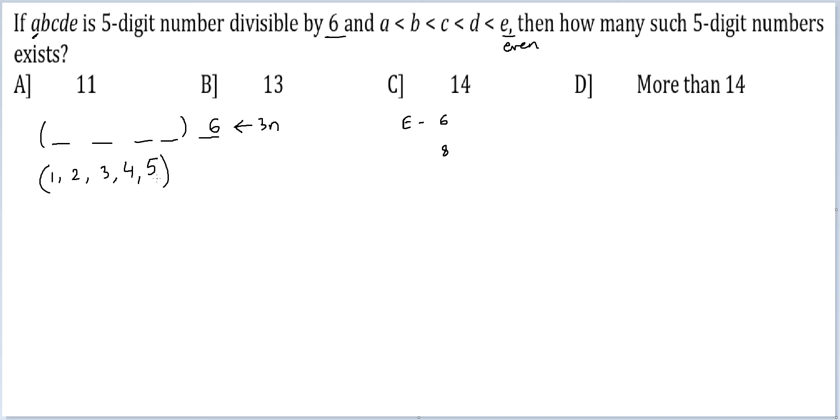1, 2, 3, 4, 5 adds up to 15, so I have to exclude one number and keep the summation a multiple of 3. The only way that works is if I remove 3. Any other number, if I remove, the summation will not remain a multiple of 3. Therefore, there is just one case possible here: 1, 2, 4, 5, 6 with 6 at the units place.